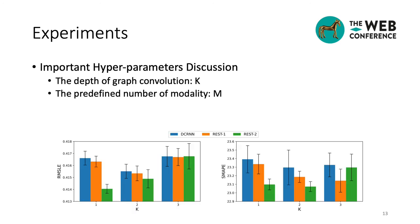The depth of graph convolution and the predefined number of modality are two important hyperparameters of the REST framework. Thus, in this slide, we report how the performance of the REST framework changes with these two hyperparameters. Firstly, let's focus on the depth of graph convolution. As we can see, no matter for DCRNN or REST framework, the models get their best performance when K is equal to 2.